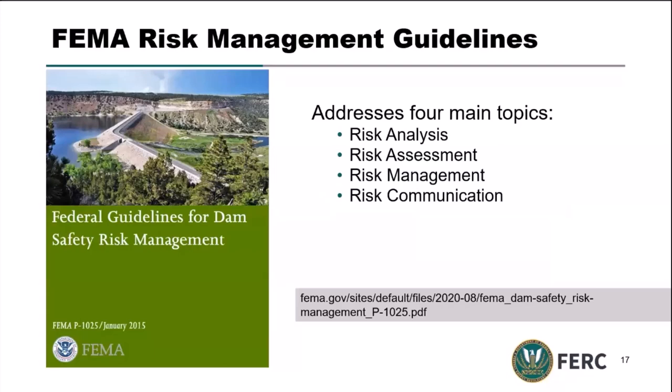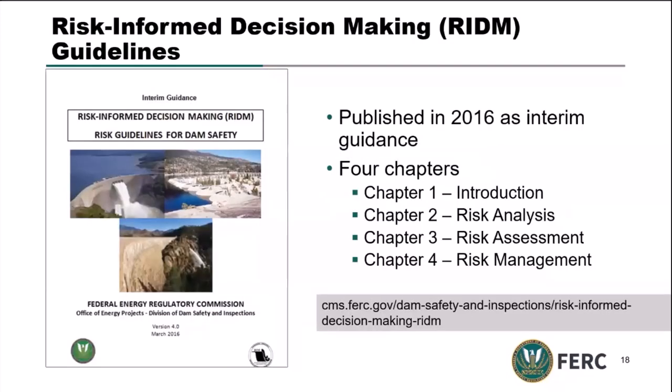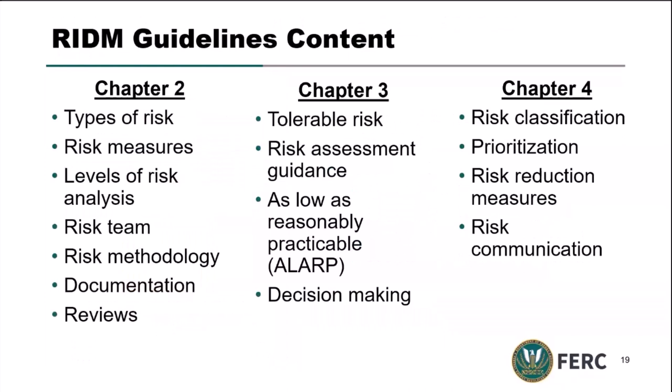The FERC RIDM document addresses four main topics: risk analysis, risk assessment, risk management, and risk communication — which we took as the four legs of a table and built our guidelines on. In 2016, we published Chapters 2, 3, and 4 as interim guidance. Chapter 2 covers risk analysis — what risk measures and types we're considering, what risk teams and methodology should look like, and how independent reviews need to be done. Chapter 3 goes into risk assessment — what is tolerable risk, what factors we look at including ALARP, and the whole decision-making process. Chapter 4 addresses risk management, with risk communication embedded in it as well.